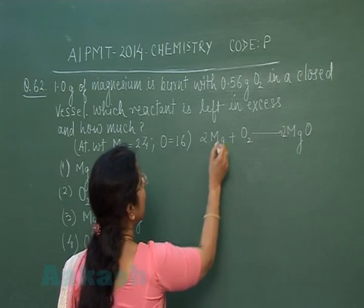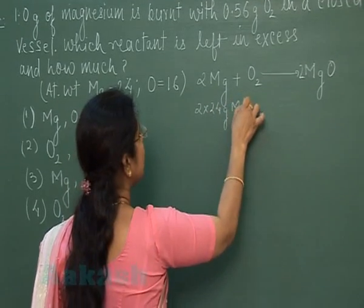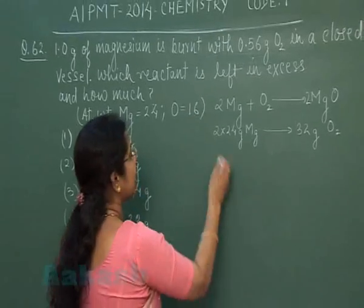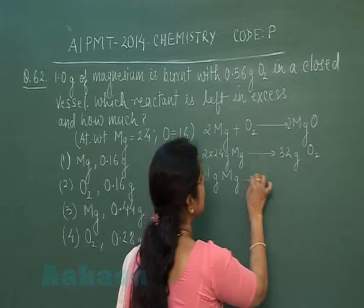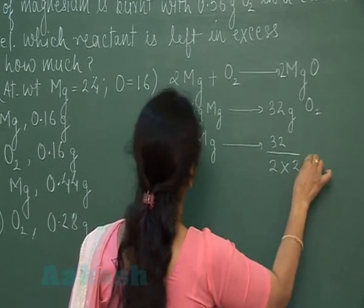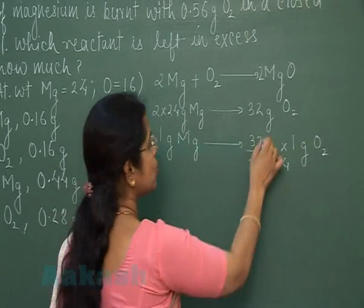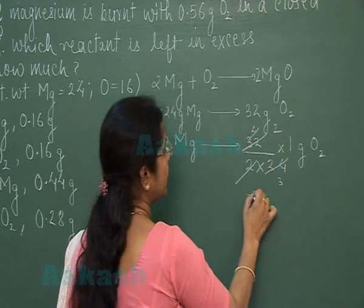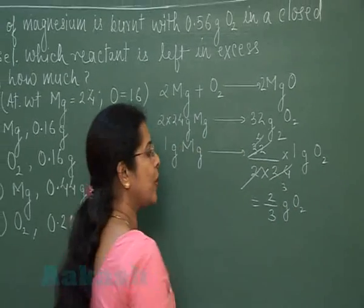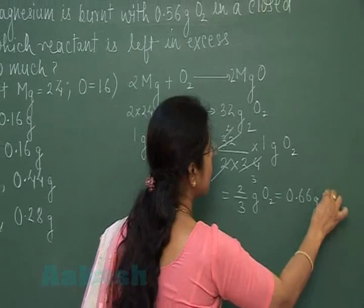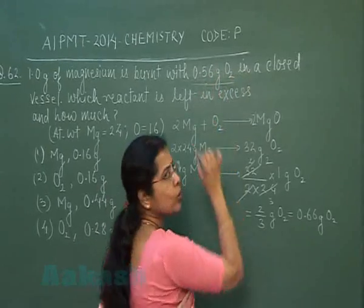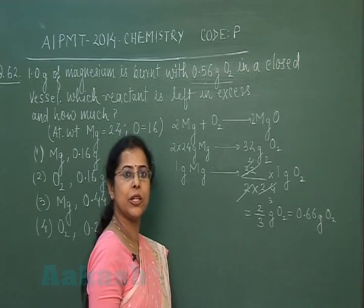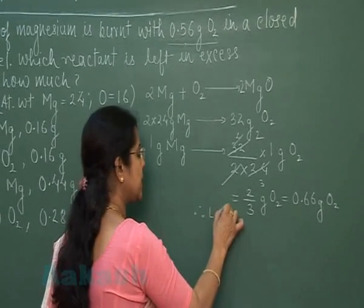From stoichiometry: 2 mol Mg (i.e., 2 × 24 = 48 g) requires 32 g of oxygen for complete reaction. For 1 g of magnesium, the oxygen required = (32/48) × 1 = 2/3 ≈ 0.66 g. But the given amount of oxygen is only 0.56 g, which is less than required. Therefore, oxygen is the limiting reagent.